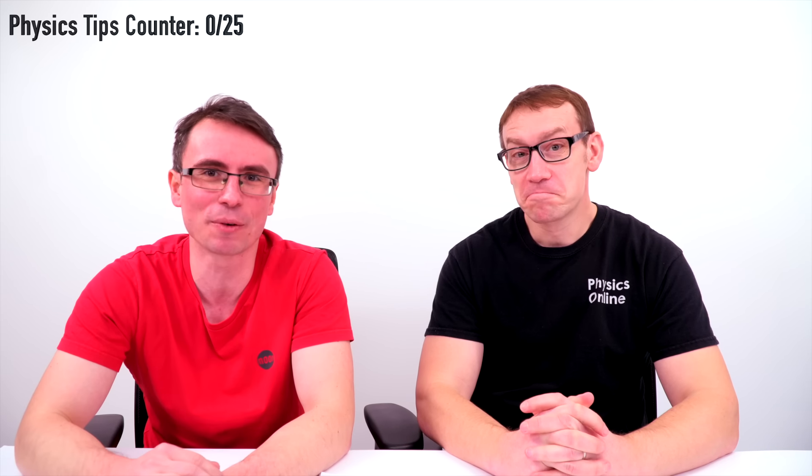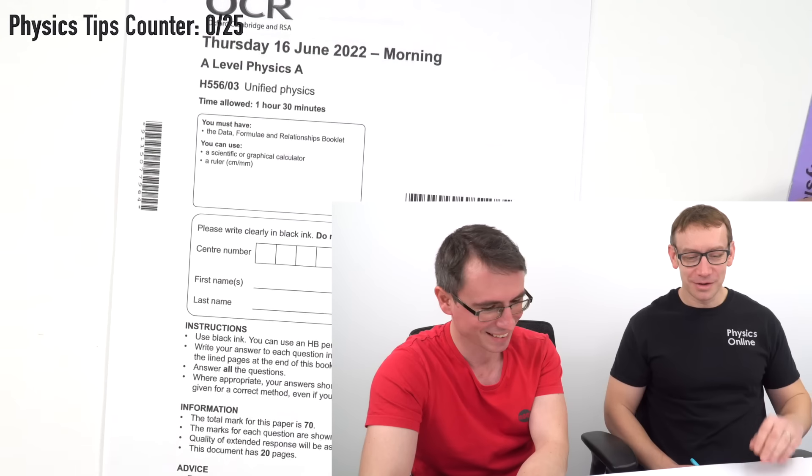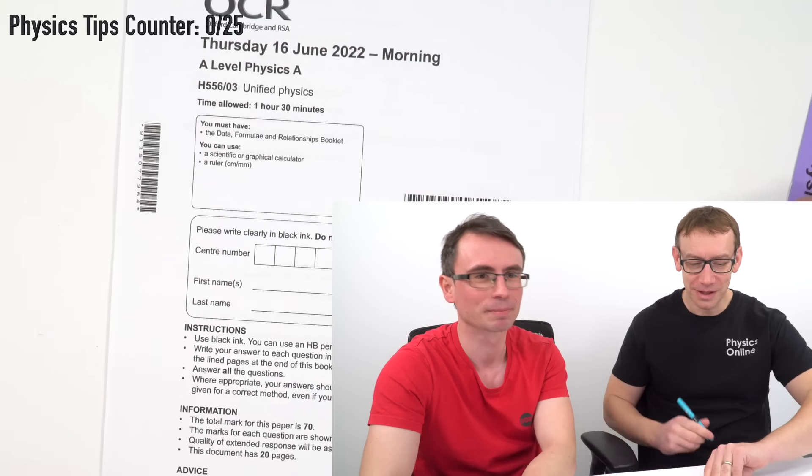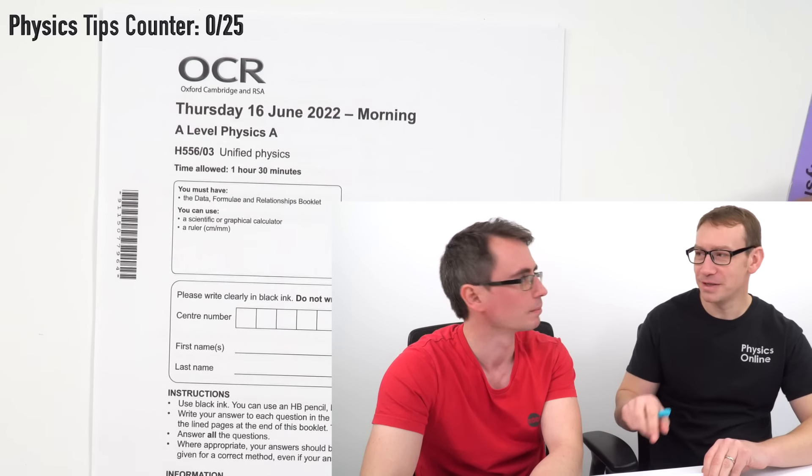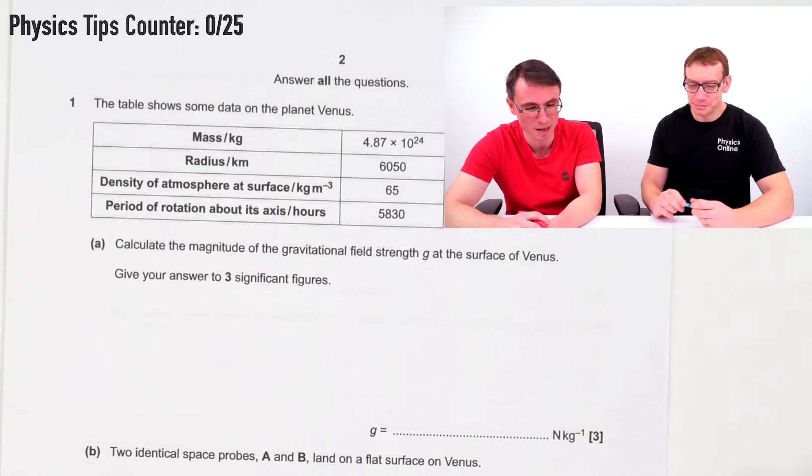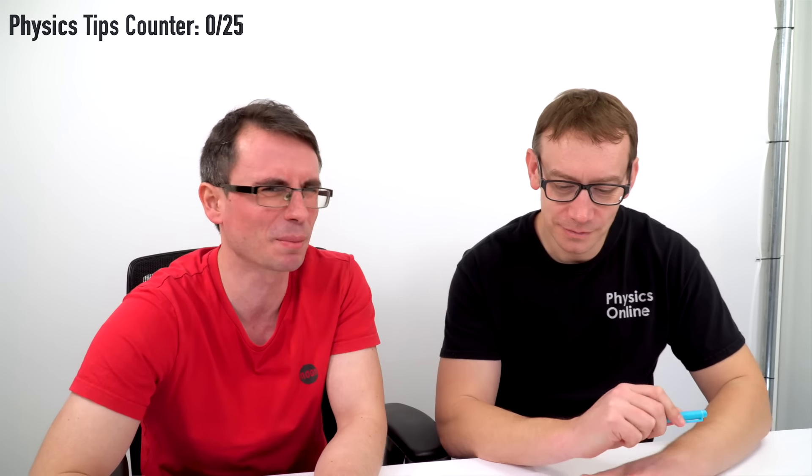Today we're joined by Lewis from Physics Online. Thanks for having me. We're going to have a look at probably what is rumoured to be the hardest A-level physics paper out there. Paper three is potentially the hardest because it's more difficult to prepare for — you don't know what could come up. So, this is an OCR Unified Physics 2022 paper, and this question is about astrophysics.